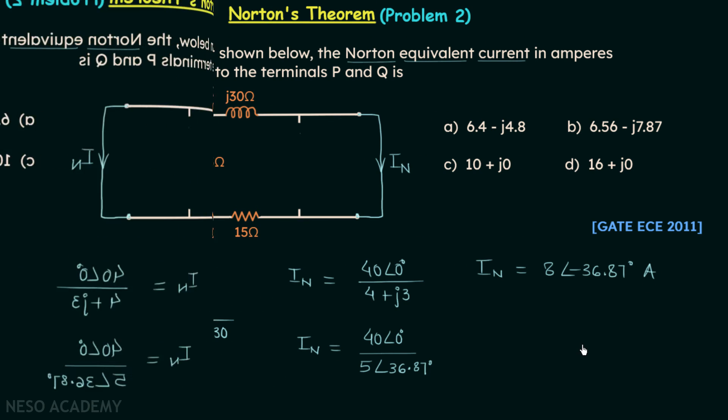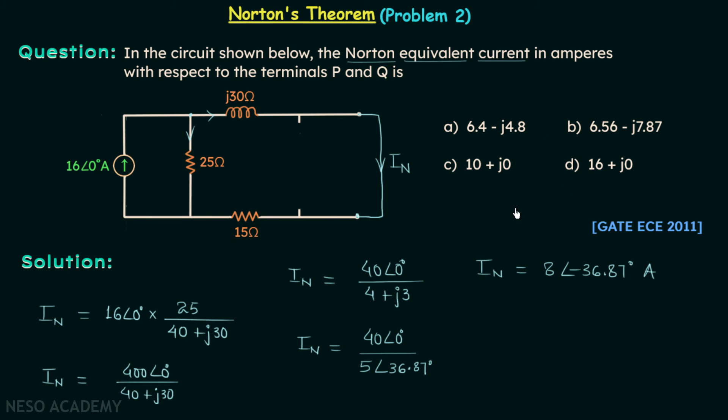This is in amperes, but the options are in rectangular form, so we will convert it to rectangular form. We will have Norton's equivalent current equal to 6.4 minus j4.8 in amperes. So from here you can see that option A is the correct option.